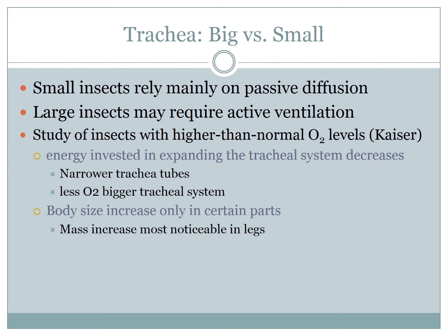Interestingly, when insects are placed in a highly oxygenated environment, they tend to grow larger than their less oxygenated counterparts. This is because less energy must be invested in the tracheal system and more energy can be put towards the growth of other systems, most notably the legs of the insect.